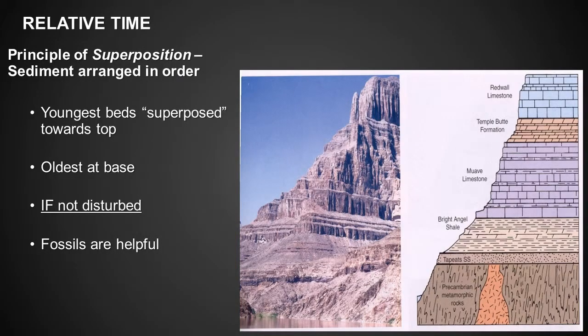The image and drawing shows the rocks in the Grand Canyon. These are used to illustrate the concept of relative time. One of the basic concepts of relative time is the principle of superposition. This concept dictates that the youngest beds or rock units are superposed towards the top and the oldest rocks are at the base, if not disturbed. Fossils are helpful to determine which is older based on the evolution of life through time.